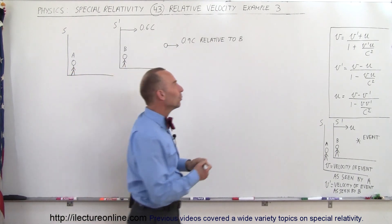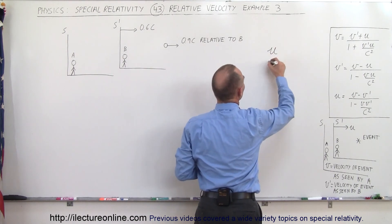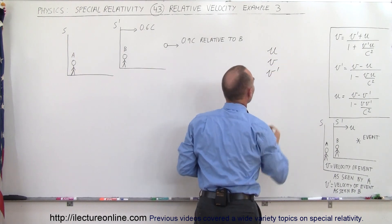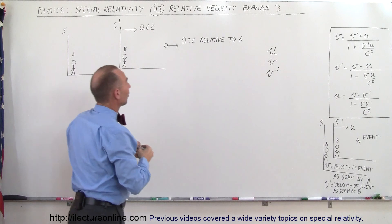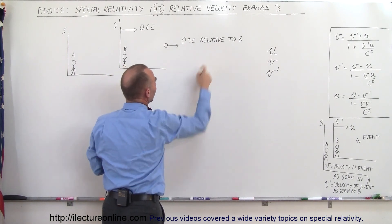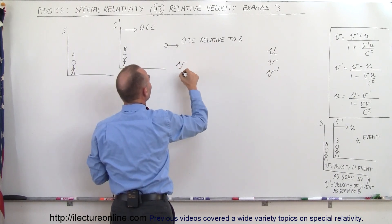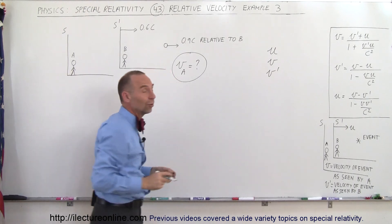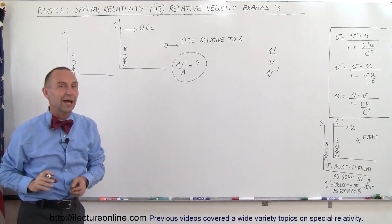So we have to define what U is equal to, what V is equal to, and V prime. Since we know what the velocity of the event is relative to observer B, we want to know the velocity as seen by observer A. So let's call it V sub A. Is that U, V, or V prime? Let's find out.